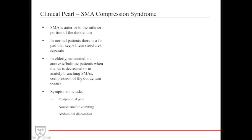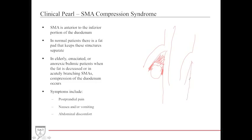SMA compression syndrome is another important and frequently tested condition. The SMA is located both anterior to and inferior to the duodenum. Fat located between the SMA and the posterior abdominal aorta helps cushion and separate the SMA from the duodenum. In elderly, anorexic, or bulimic patients where this fat pad is decreased — or if the artery itself arises at a sharper angle — the duodenum can be compressed to a point where food cannot pass through. This results in postprandial pain after eating, nausea and vomiting, and abdominal discomfort.